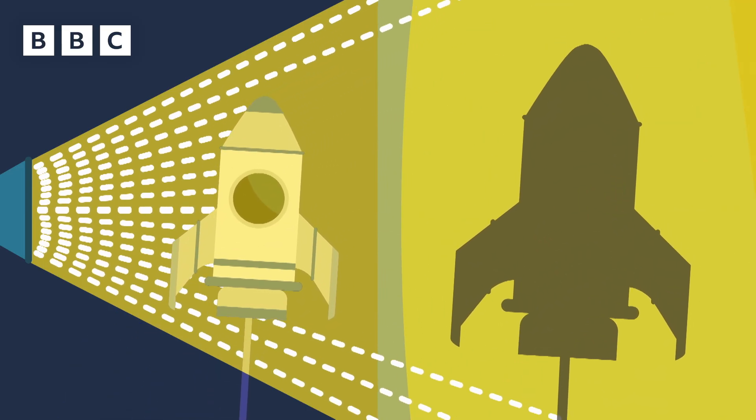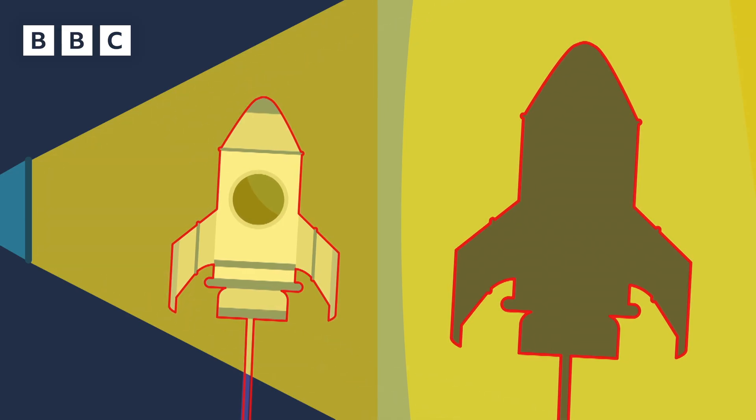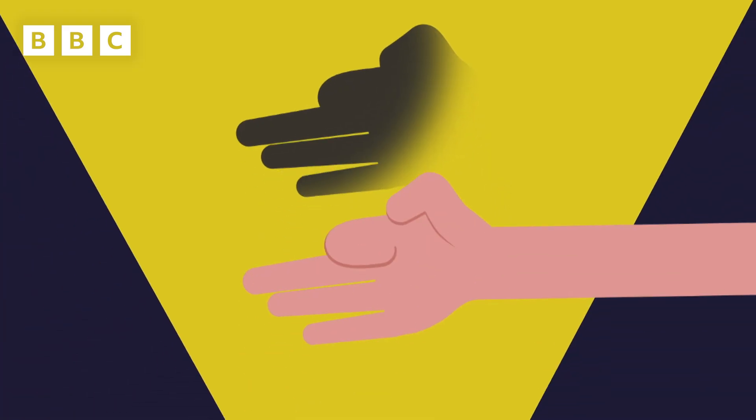Where the light is blocked, a shadow is made of the same shape. The closer to the light source, the bigger the shadow. Sometimes shadows might look like one thing, but really, they're something else.